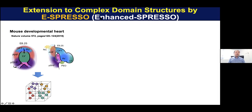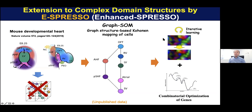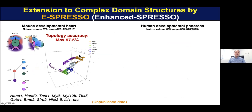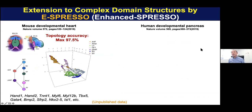We are currently extending our method to more complicated data, such as mouse heart or pancreas. Our previous method was very simple and used a cube structure, so we now change our method to use a graph-SOM-based mapping. For the heart structure, we have seven domains in a circular arrangement and apply SOM to reconstruct it, using more efficient combinatorial optimization of genes. Since this is unpublished data I cannot share many details, but for mouse developmental heart we already attained 97% accuracy, and for human developmental pancreas we attained 95%.